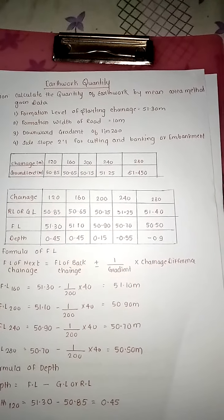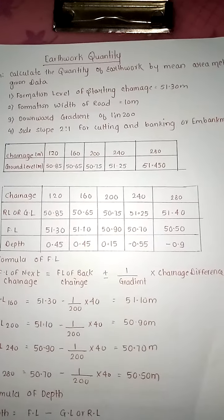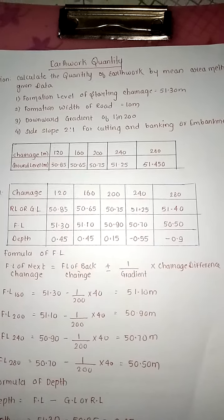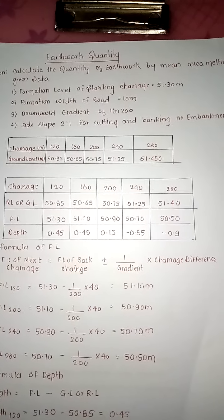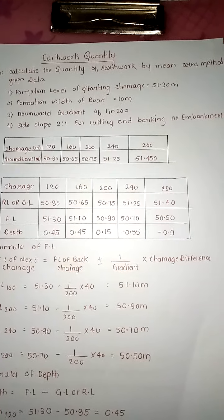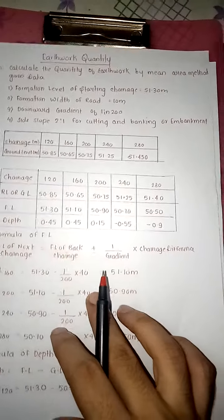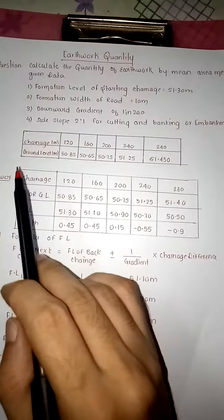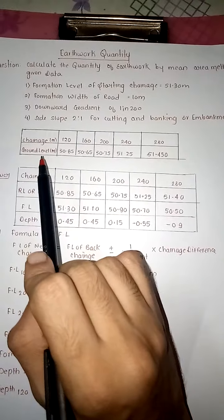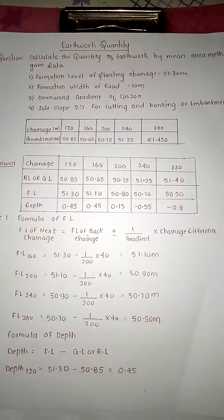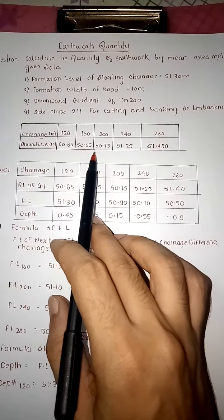the quantity of earthwork by mean area method. Given data: formation level of starting chainage 51.30 meter, formation width of road is 10 meter, downward gradient of 1 in 200, side slope 2:1 for cutting and banking or embankment. Common side slope given for embankment and cutting.